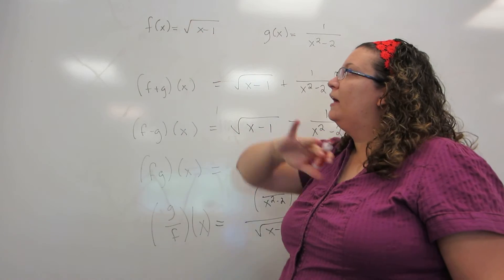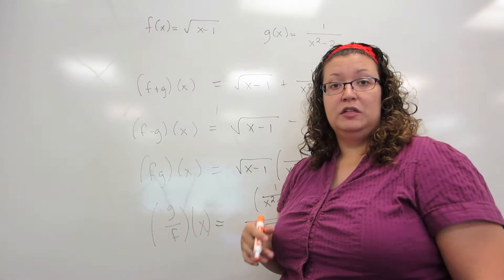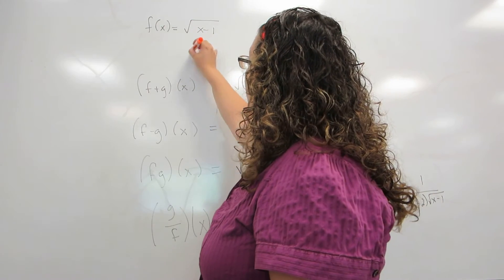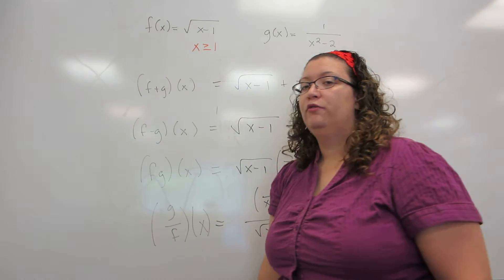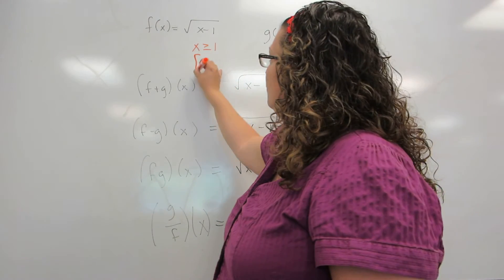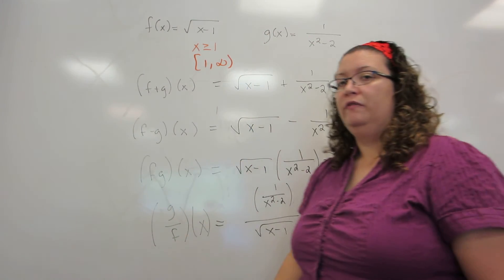First of all, if you remember, f, the problem that arises is we're not allowed to take a square root of a negative number in this context. So that means that x has to be greater than or equal to 1. If you want to write that in interval notation, it'll be 1 to infinity.